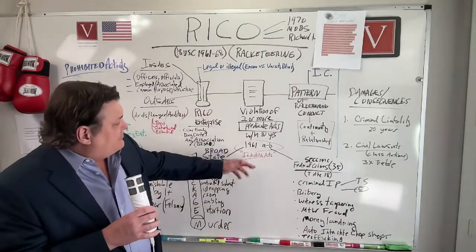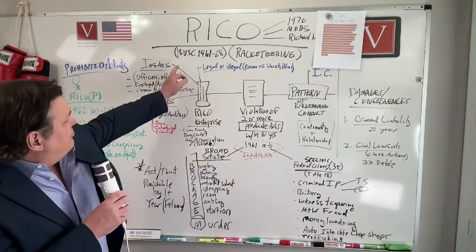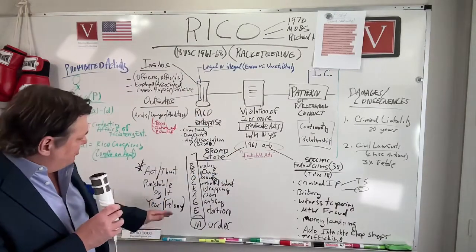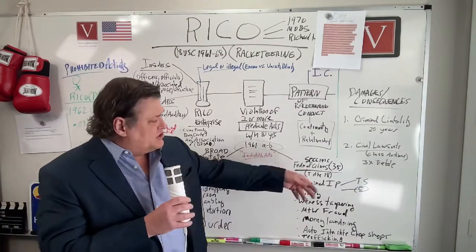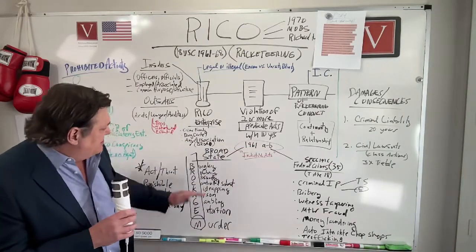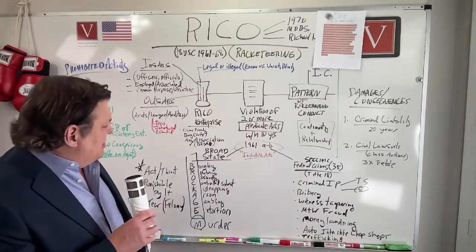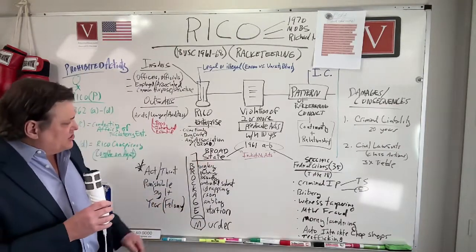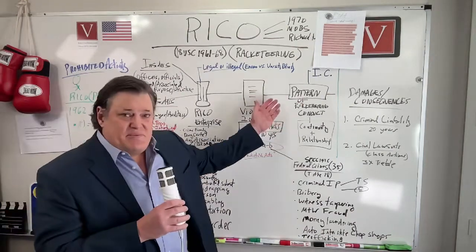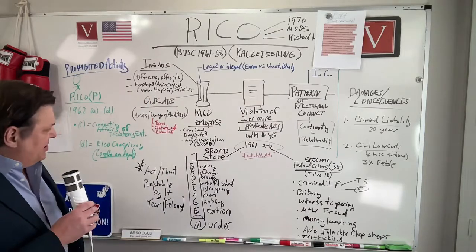Let's look at these predicate acts. We have the enterprise. Now we need to look at 18 U.S.C. 1961 to 1968. Under section 1961, there are actually five different ways — this section goes to section G — but the commonly litigated ones are section A and section B. Section A covers violations of state law; section B covers violations of specific federal laws under Title 18. The state statutes look for two or more predicate acts within 10 years — note that, within a 10-year period — and there needs to be some kind of pattern of racketeering conduct.